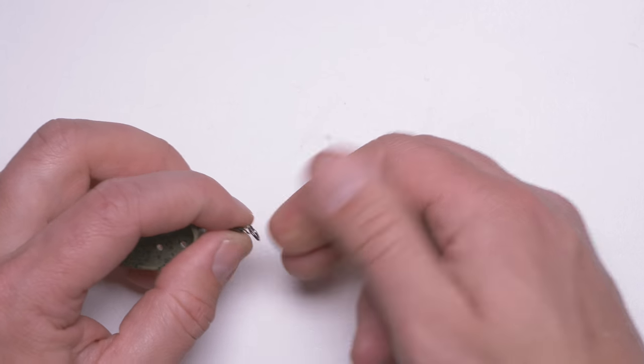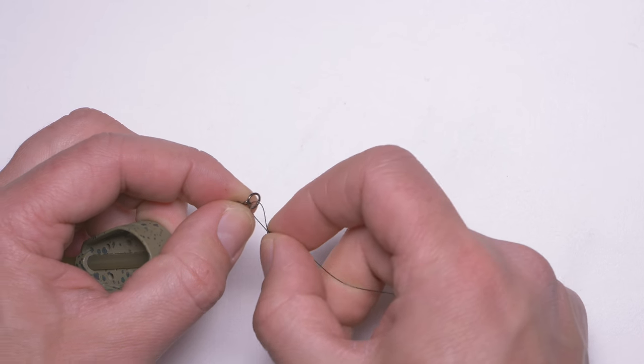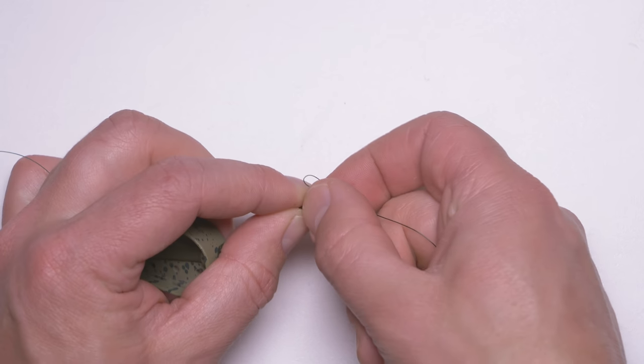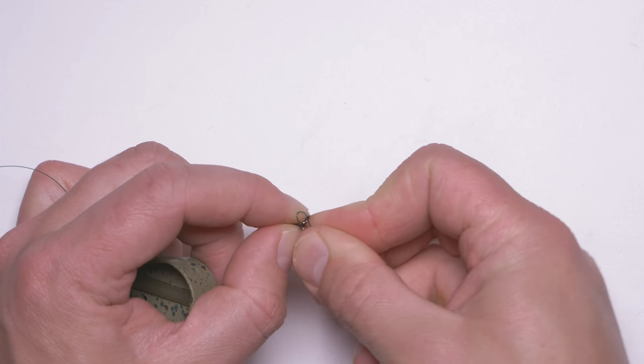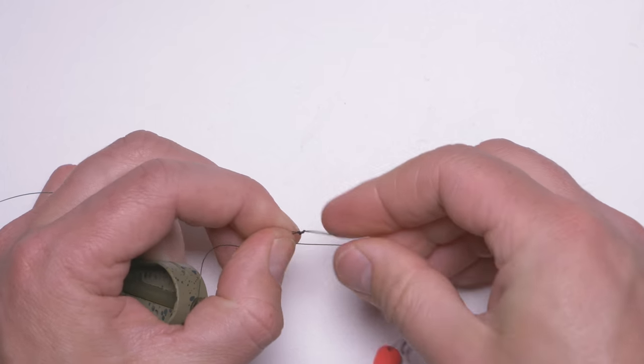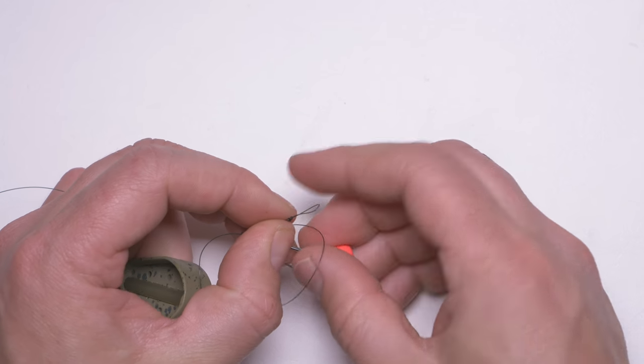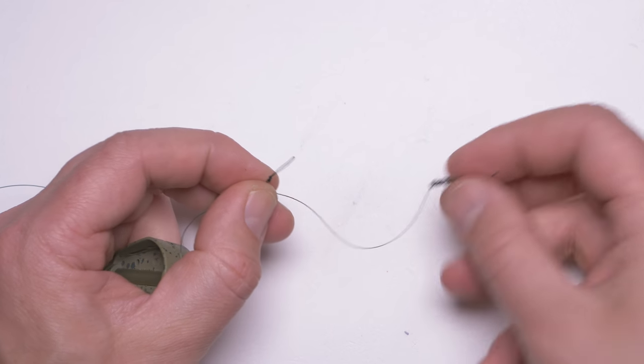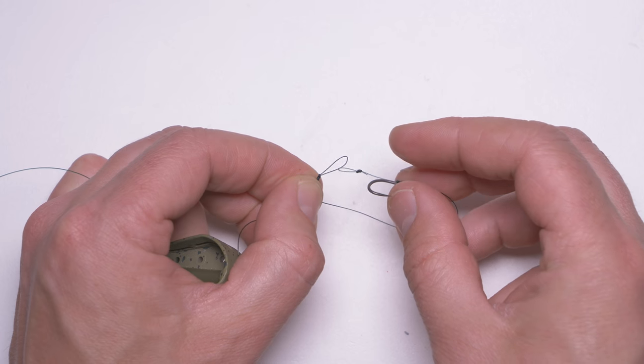I will use a loop-to-loop connection here. We have to remove my hook bait before putting this hook link on.